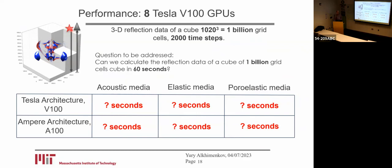The wave propagates downwards, then reflects and propagates upwards, and we record it using a receiver. The question is: can we calculate reflection data in less than a minute? Here you can see acoustic media, elastic media, and poroelastic media — three different scenarios.